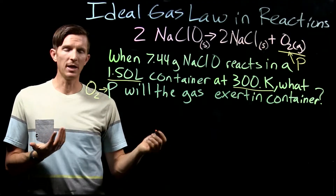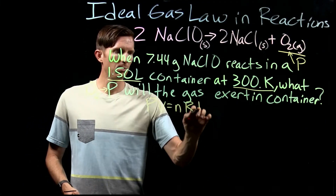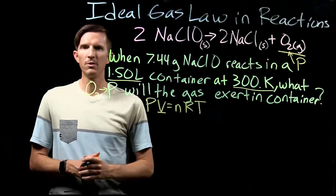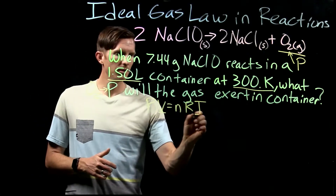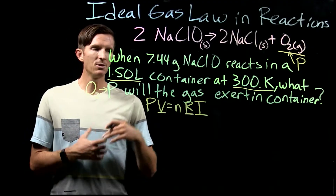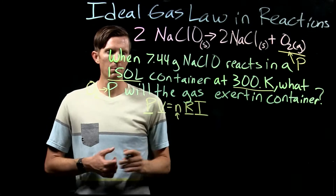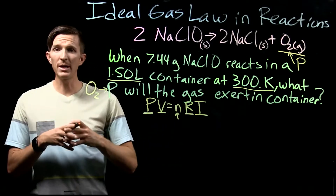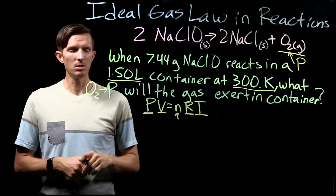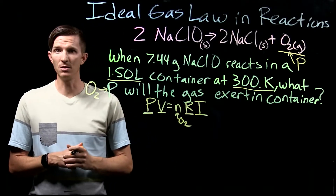To find that pressure, we're going to use the ideal gas law: PV = nRT. We know the volume of our container, we know the temperature of the gas, and R is a constant. So to figure out the pressure, we need to know the number of moles of whatever gas will exert pressure inside this container — and we've identified that it's only going to be oxygen.